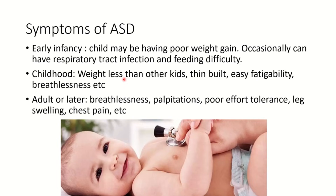As one grows into adulthood, maybe at 25 to 30 years of age, when there is significant dilatation of the right side and pulmonary pressure goes up, then there is significant breathlessness and palpitations. Then as heart failure sets in, there is leg swelling and chest pain. All these symptoms begin to set in.